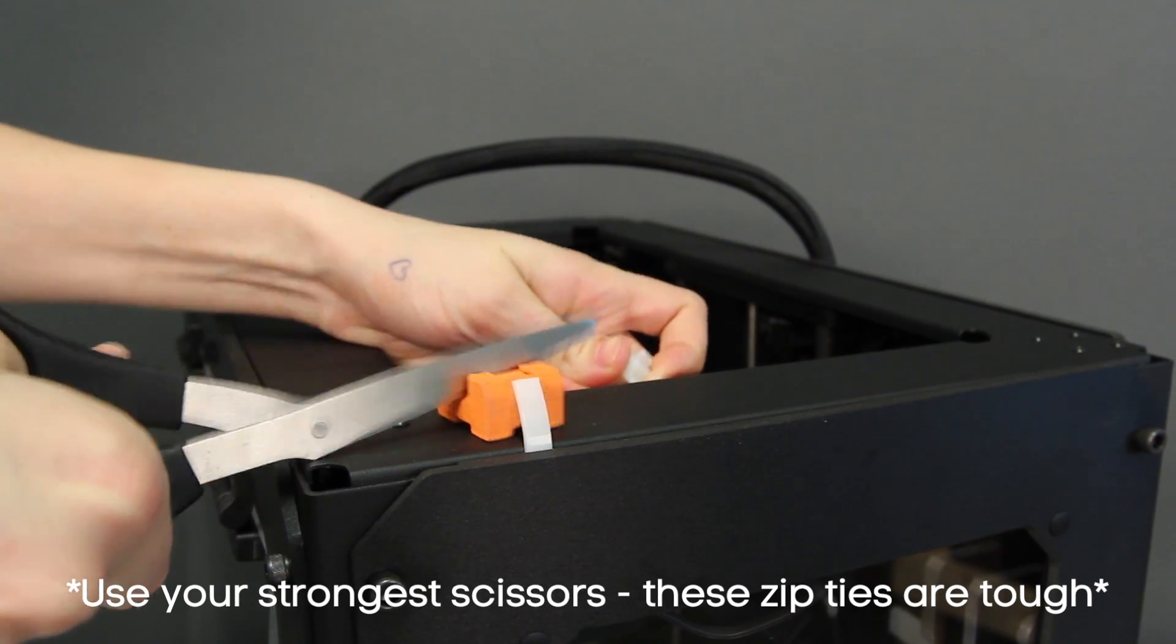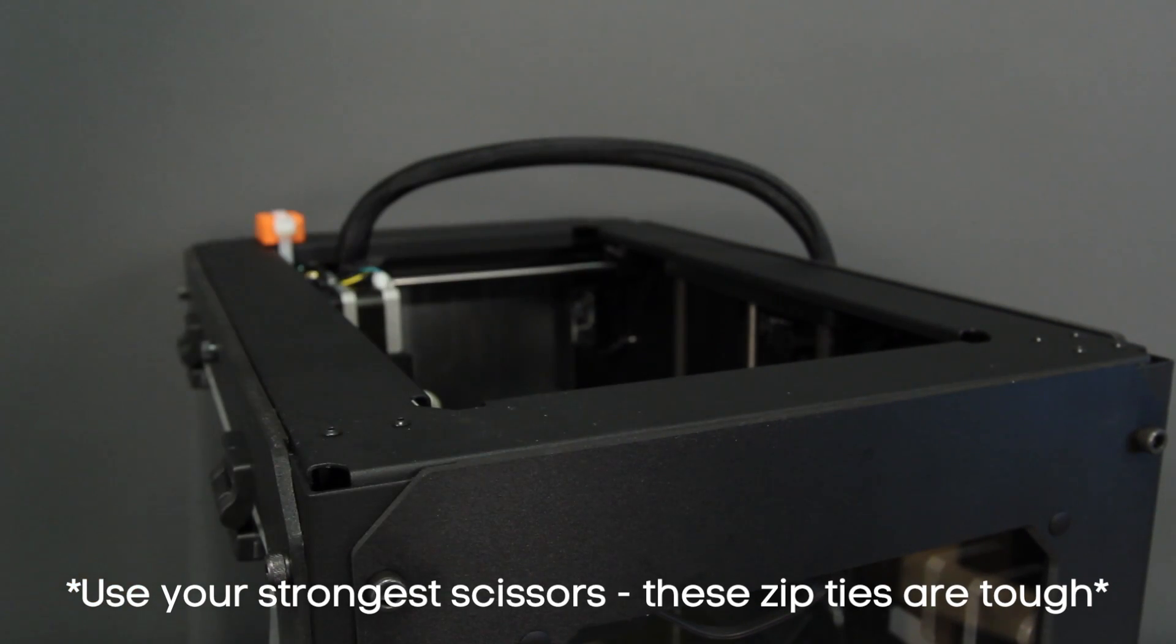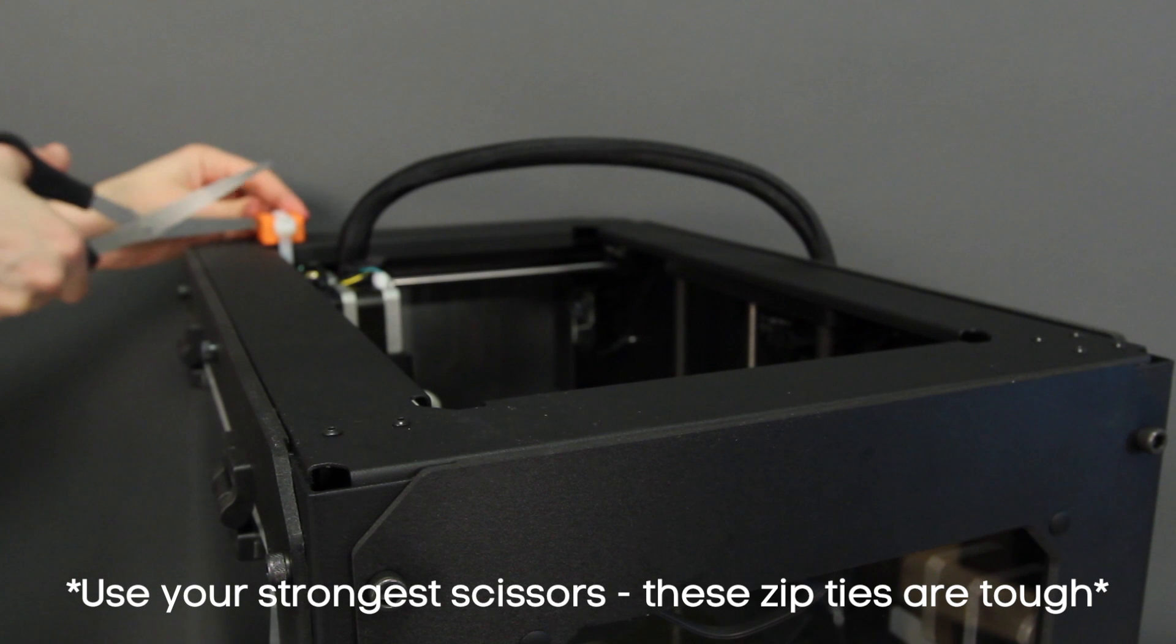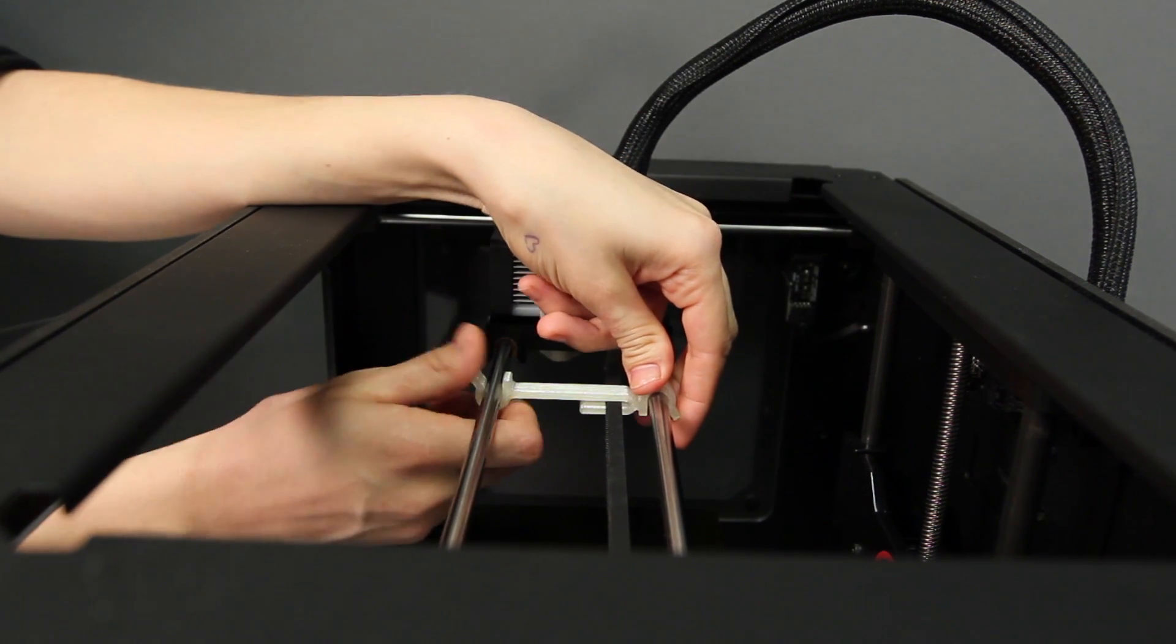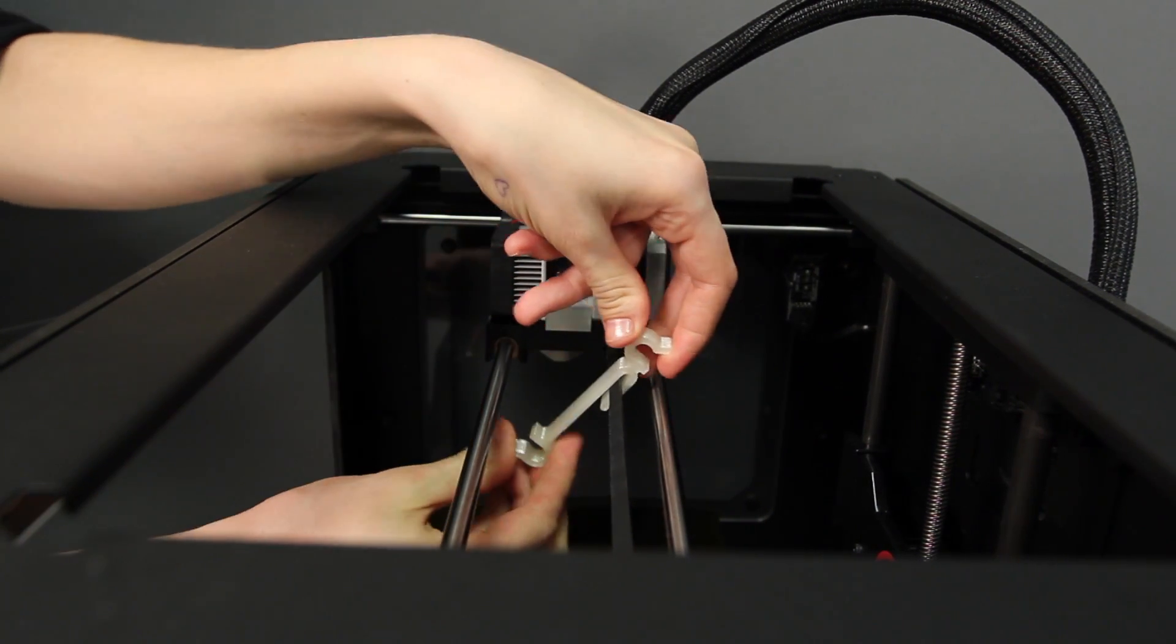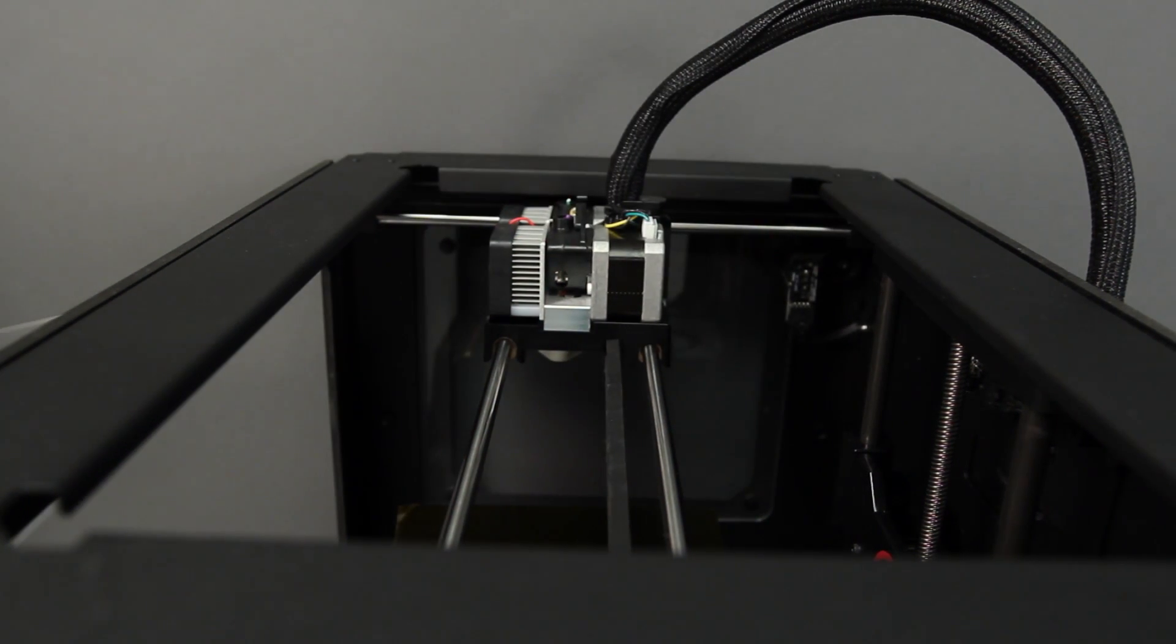Carefully cut and remove these two zip ties and the plastic pieces that hold them in place. You'll also need to remove the small plastic piece attached to the lower gantry rods and the Y axis belt. Just tilt it like this until it snaps off the rods, and then slide it off the belt to remove it.